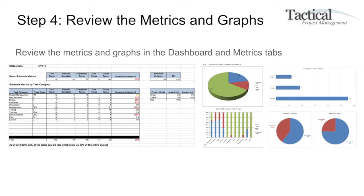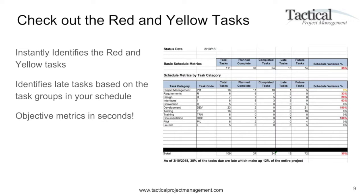As you can see in the screenshot, I've instantly identified all my late tasks, organized by task groups, with different dashboards indicating task progress and a summary of issues, project risks, and more. Looking at the red and yellow tasks, I've categorized all tasks across several task categories — for example, I'm 9% behind on project management tasks, 33% behind on requirements, and 100% late on development based on schedule variance.